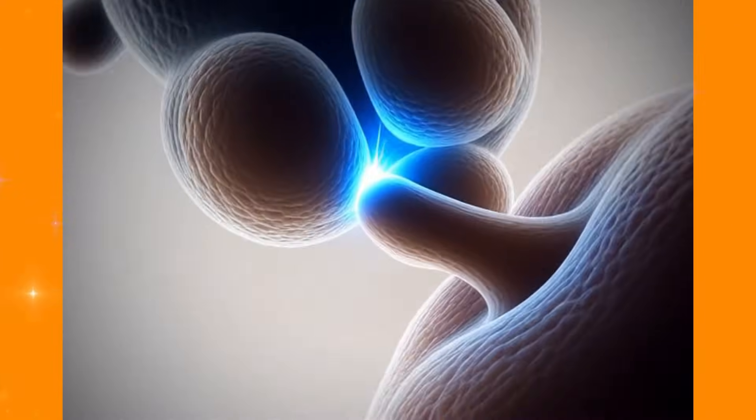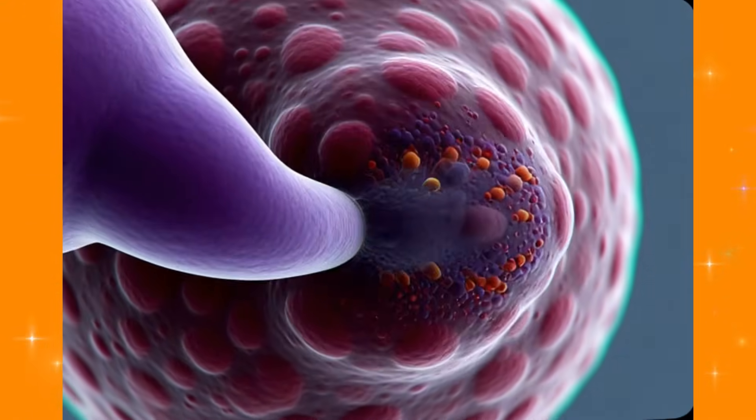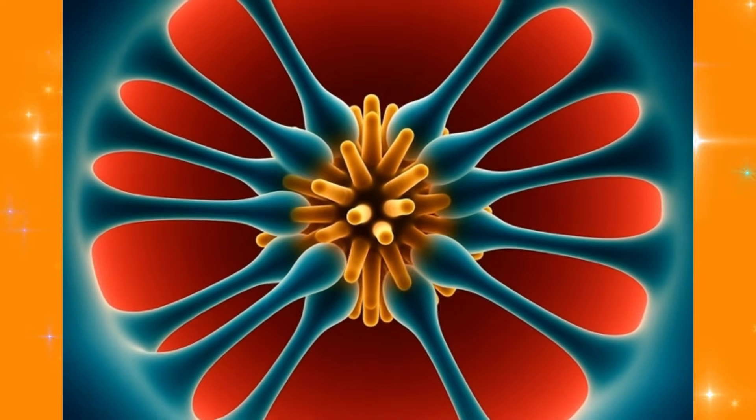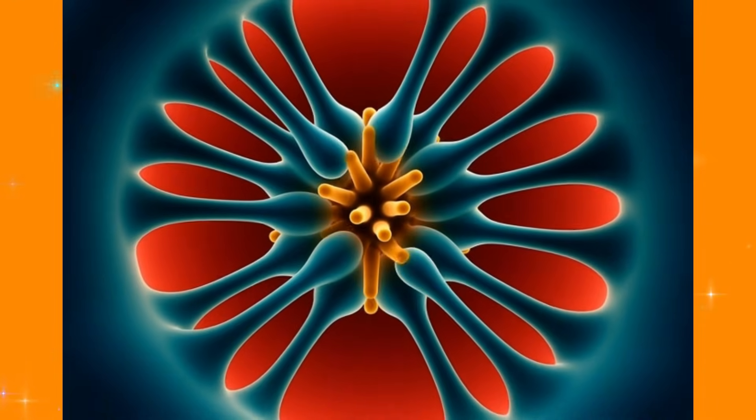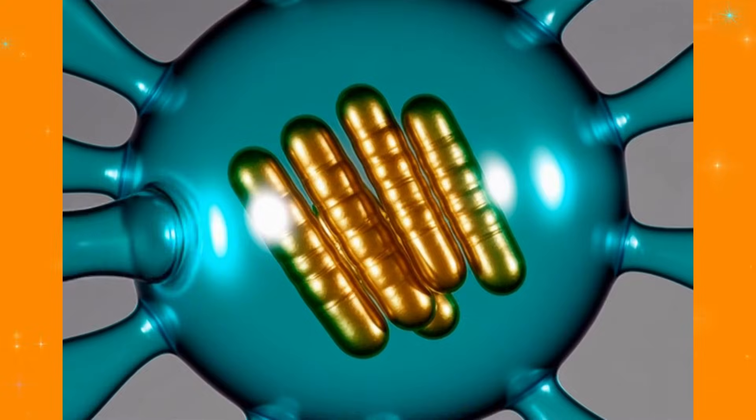Now comes the moment of contact. The neutrophil doesn't just bump into the bacteria. It actively reaches out and grabs it. Those pseudopods wrap around the invader in what scientists call phagocytosis, which literally means cell-eating. The bacteria is pulled inside, trapped in a bubble called a phagosome. But the battle isn't over.